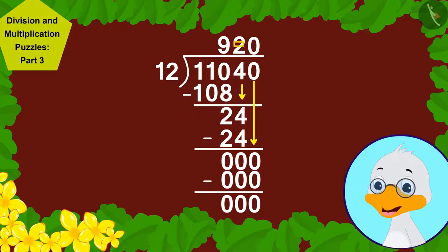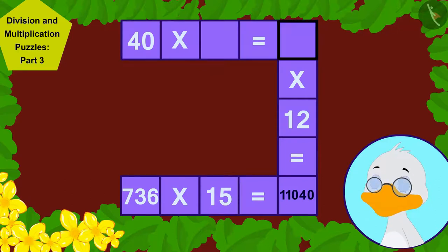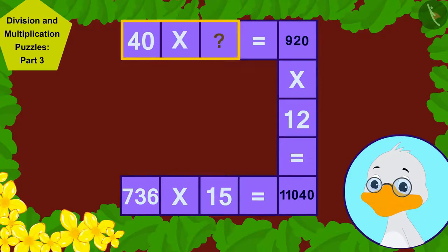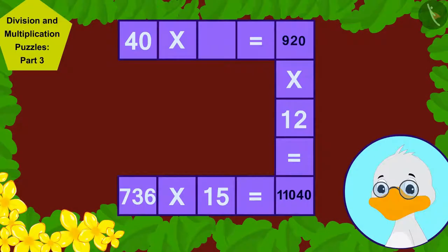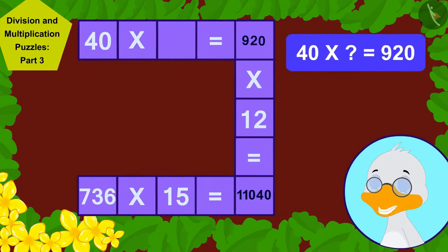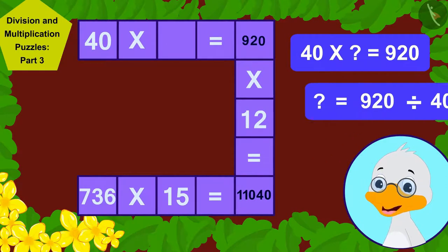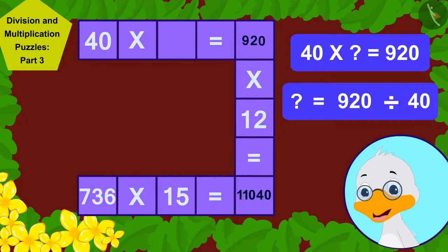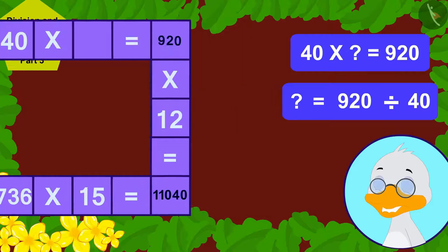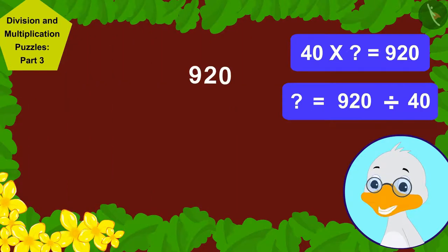Now it is very easy. All I had to find was the number which when multiplied by 40 gives the answer 920. Once again by writing this multiplication as division in this way, I wrote the answer of 920 divided by 40, 23, in this blank space.